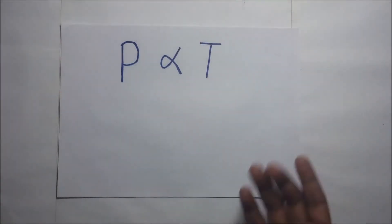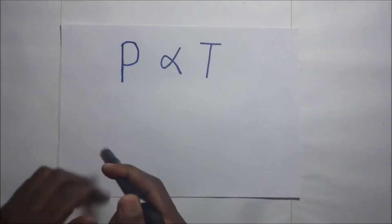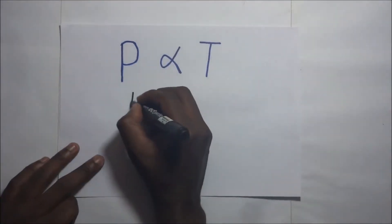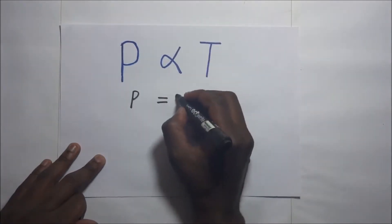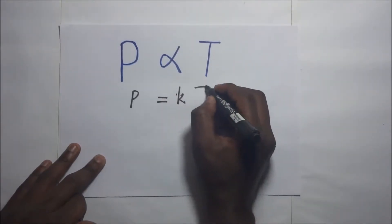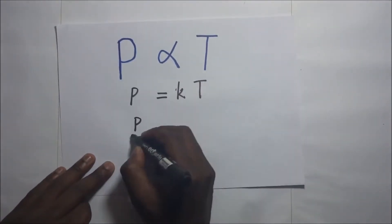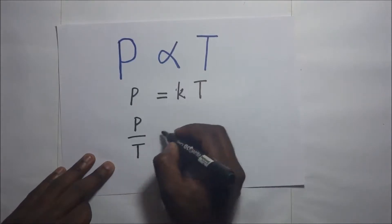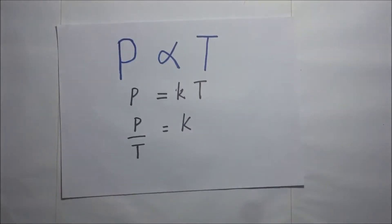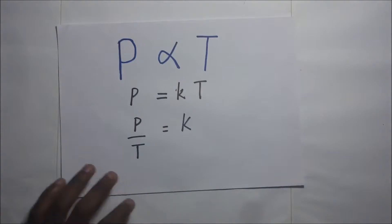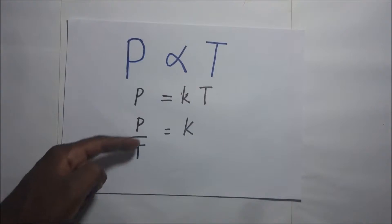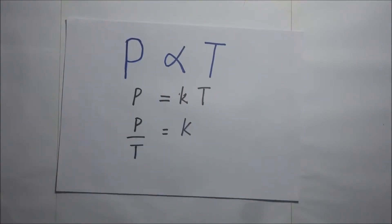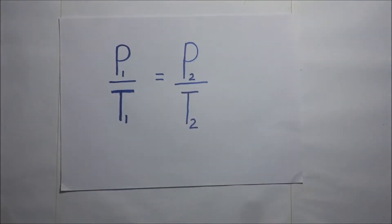provided the volume is held constant. So mathematically, to remove the proportionality sign we introduce a constant of proportionality K, giving us P = KT. Making K the subject gives P over T equals K. When comparing the same substance under two different conditions, this becomes P1 over T1 equals P2 over T2.